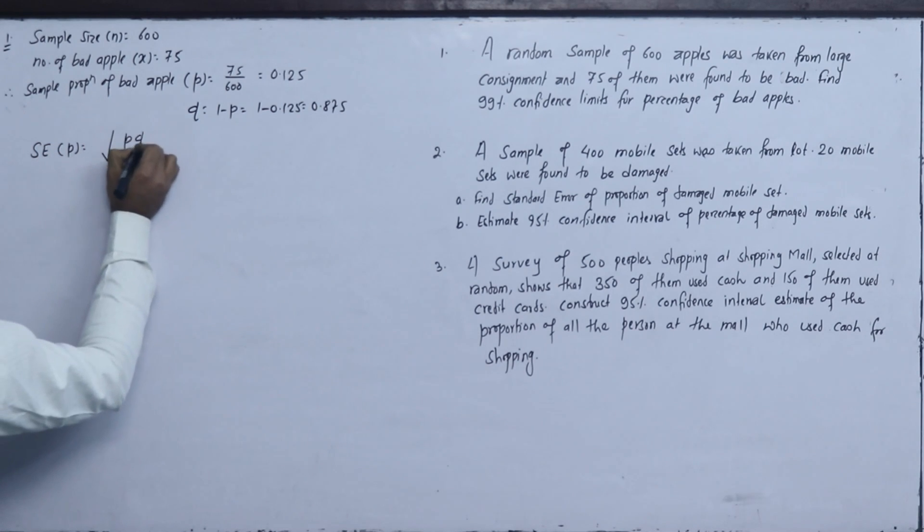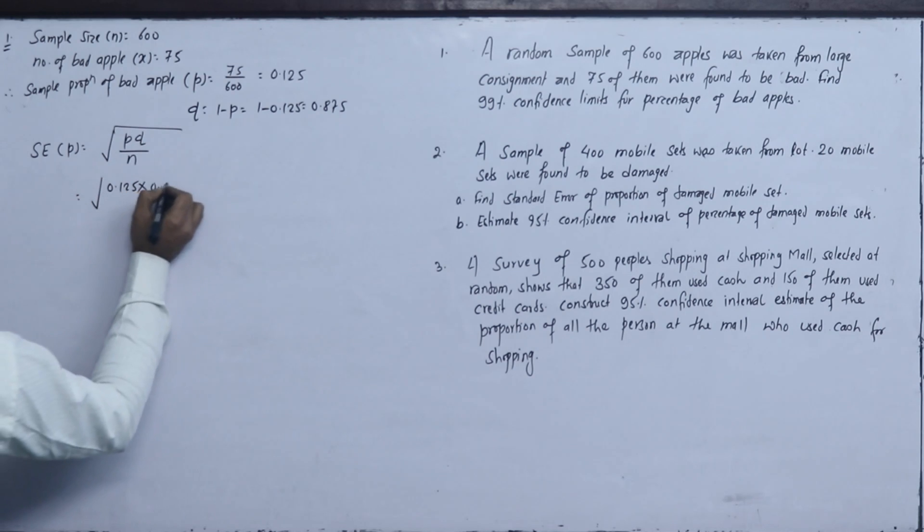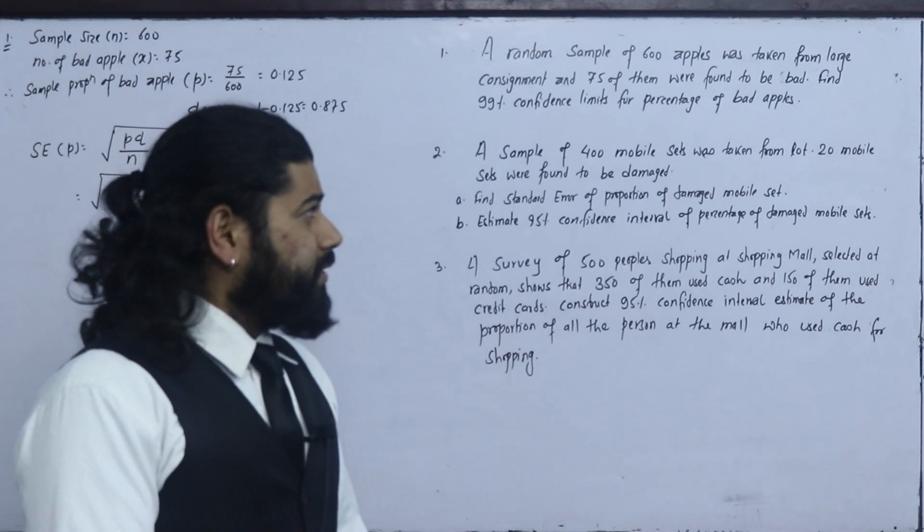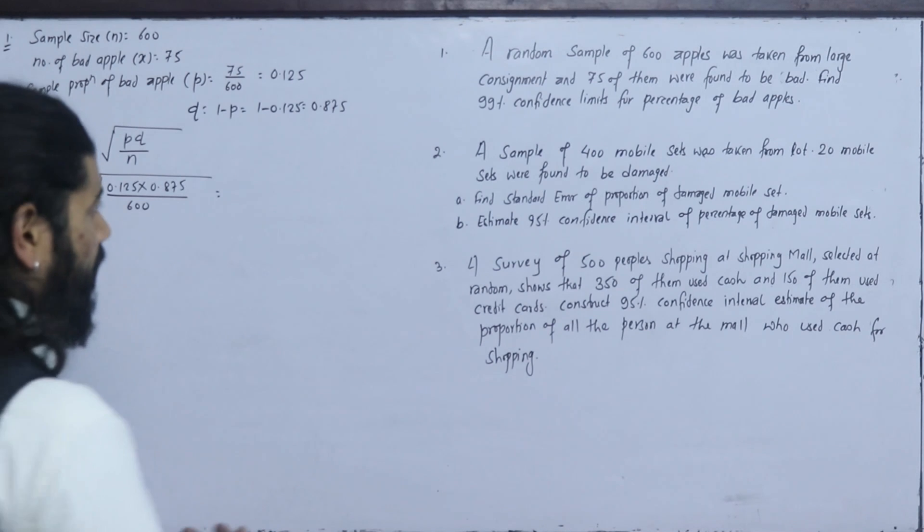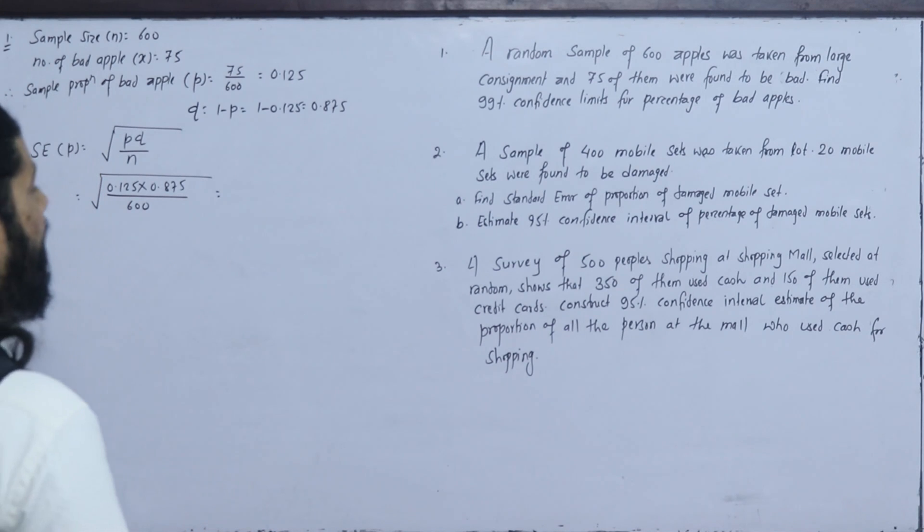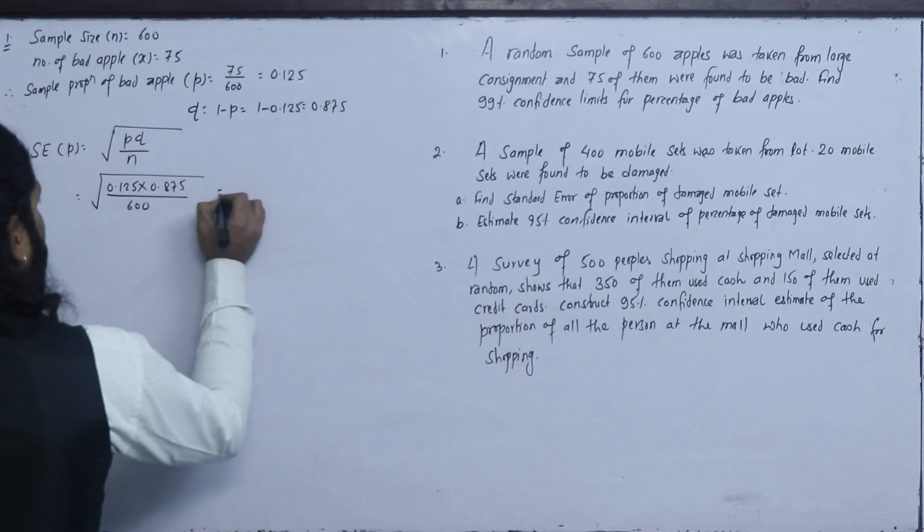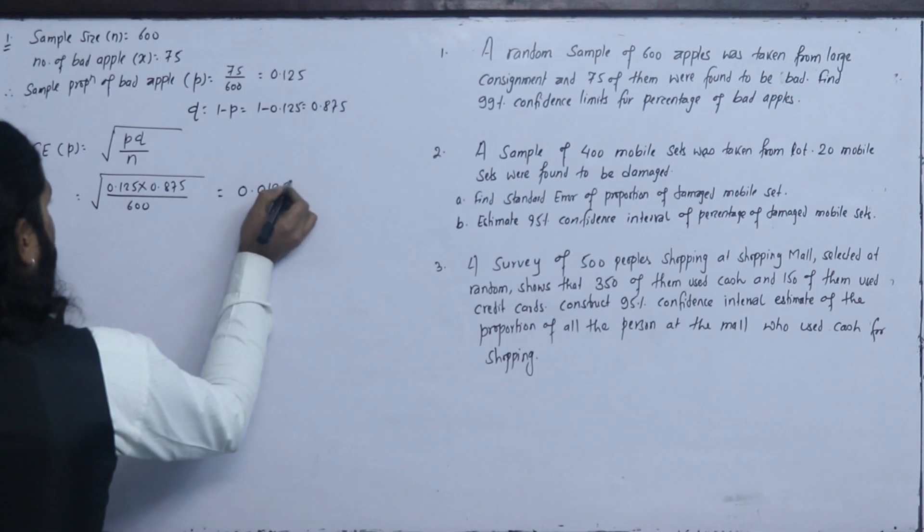Now we have standard error of the sample proportion. We have small p into small q - 0.125 into 0.875, divided by 600. We have to multiply this number, divide by 600. We have standard error 0.0135.